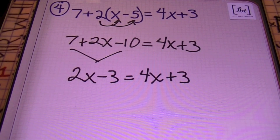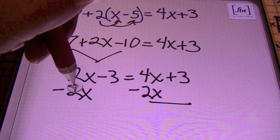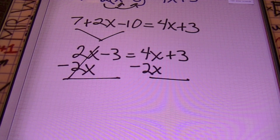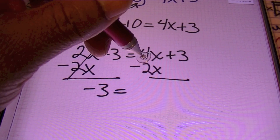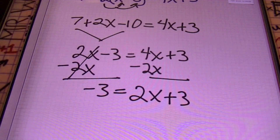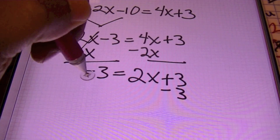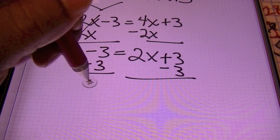I have a choice as to where to put my variables, and I'll choose the right side again because that gives me a positive result. I'll subtract 2X from both sides — our goal is always to isolate the variable. The 2X cancels out; bringing down negative 3, which equals 4X minus 2X, which is 2X, plus 3. Then I subtract 3 from both sides, and negative 3 and negative 3 combine to give me negative 6.